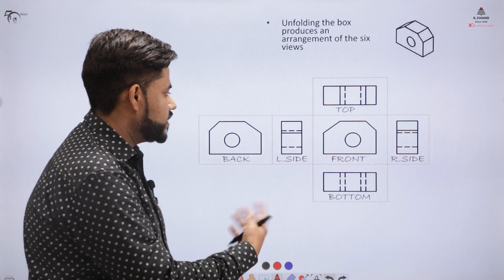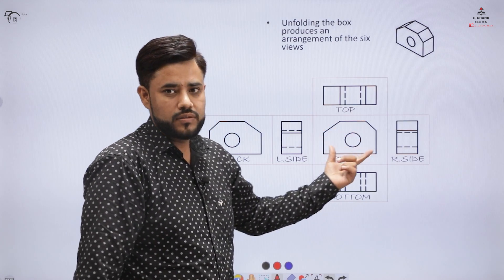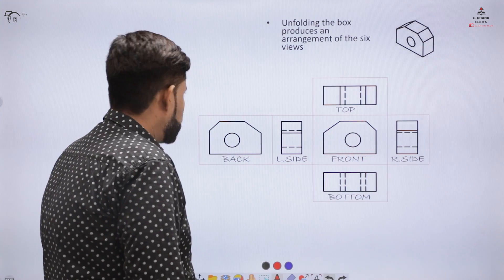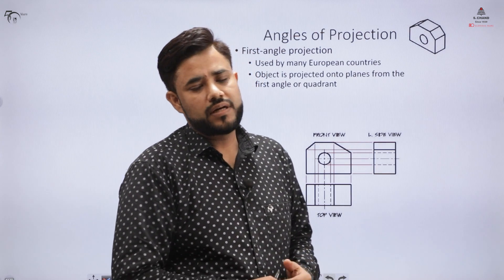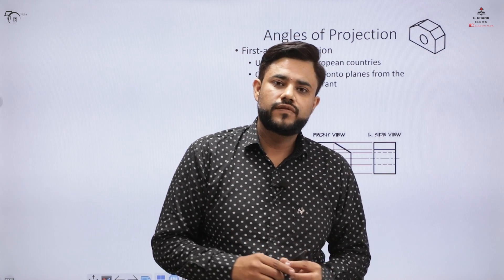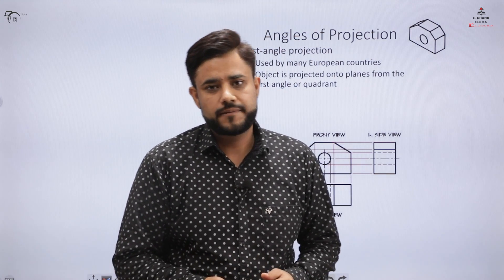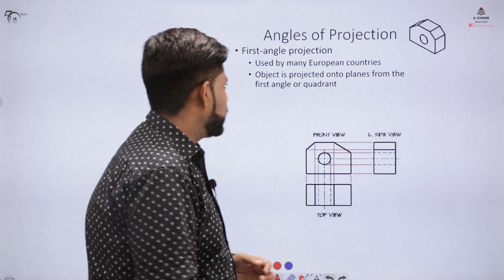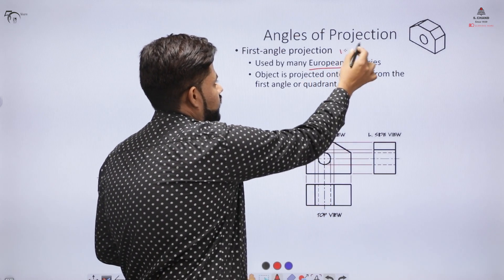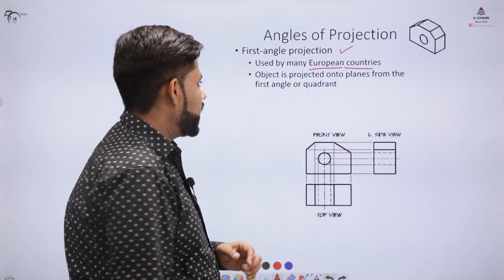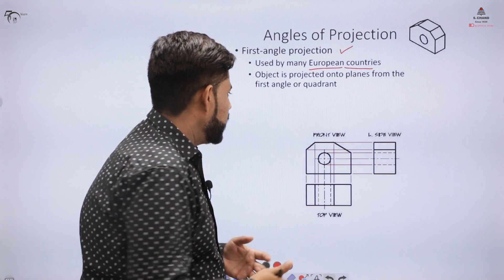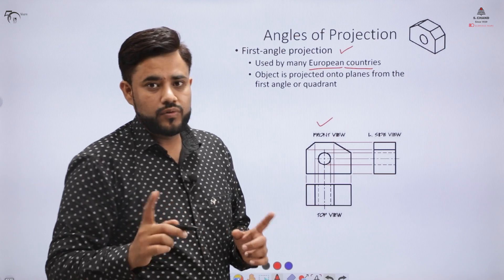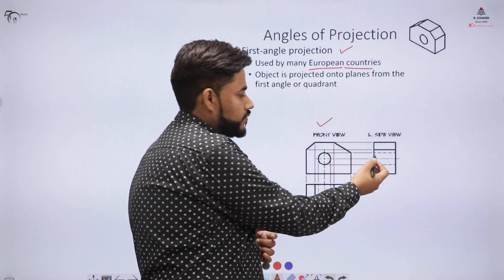The science behind keeping the front view above or the top view above comes down to the angles of projection. Majorly, from the start of this course, we have talked about two angles of projection: first angle projection and third angle projection. In majority of European countries including India, we follow the first angle projection. In this system, we keep the object in the first quadrant. By keeping the object in the first quadrant, the front view appears above. The side view is always connected with the front view.